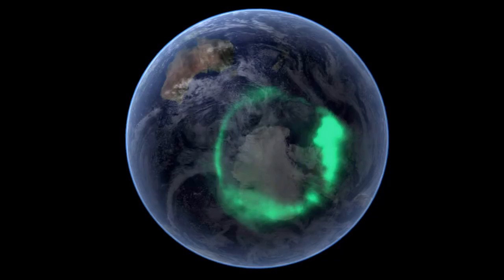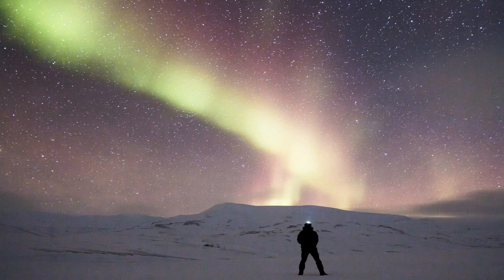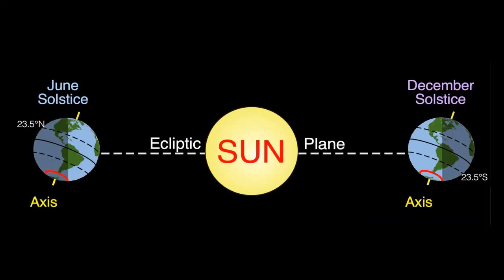The polar night can last days to months depending on the location. There is a period where the sun does not appear above the horizon in the winter. The polar night is also caused by the rotation of the Earth around the sun. The Earth rotates on its tilted axis at 23.5 degrees. Because of this tilt, there are periods of the year where the Arctic Circle and the Antarctic Circle experience polar days and polar nights.